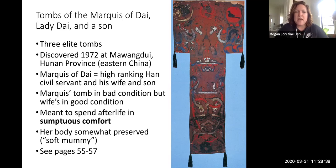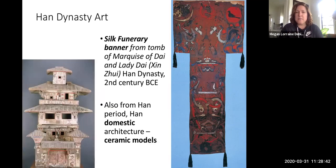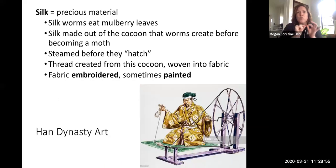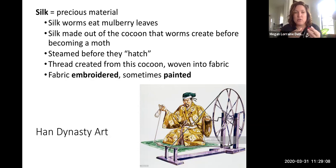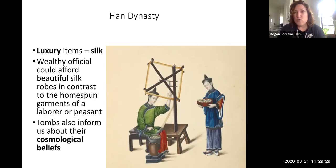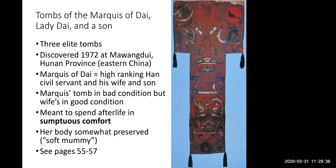The funerary banner is made out of silk. Silk is a luxury item — the silkworm has to eat mulberry leaves, then builds a cocoon preparing to become a moth. Before it hatches, the cocoon is steamed, the thread is extracted, and woven into fabric. It's quite an elaborate process to produce this. If you've ever touched silk you know it's really soft, and because of this elaborate process it is a luxury item — regular everyday people were not wearing or being buried with silk fabrics.